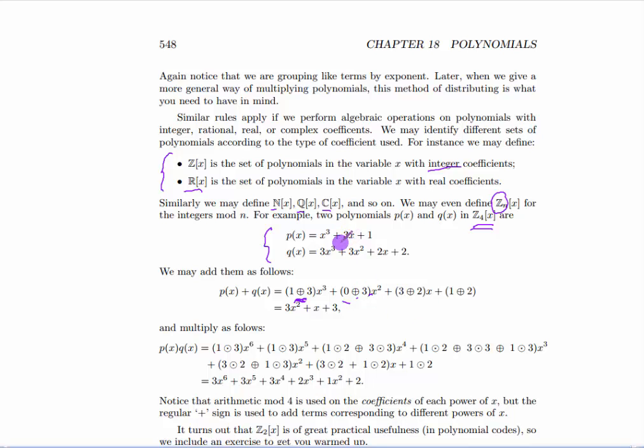Then the terms that involve x to the first power, 3 circle plus 2. And for the constant terms, 1 circle plus 2. Now we have to use mod 4 arithmetic on these. This gives you 0, this gives you 3, this gives you 1, and this gives you 3.